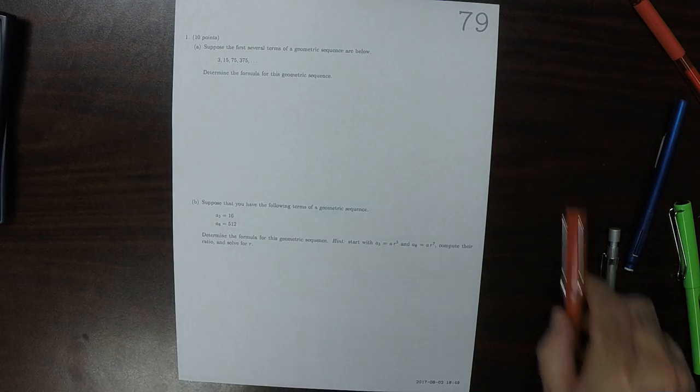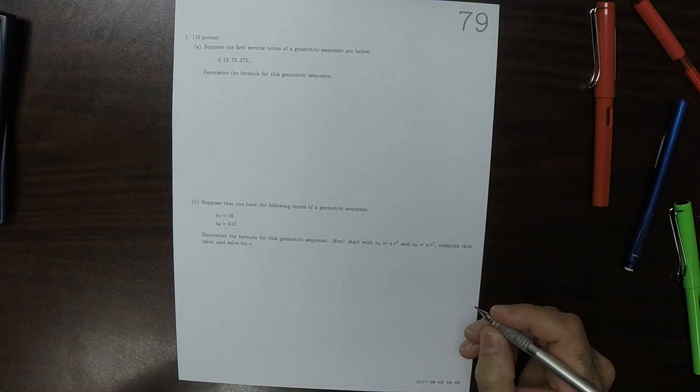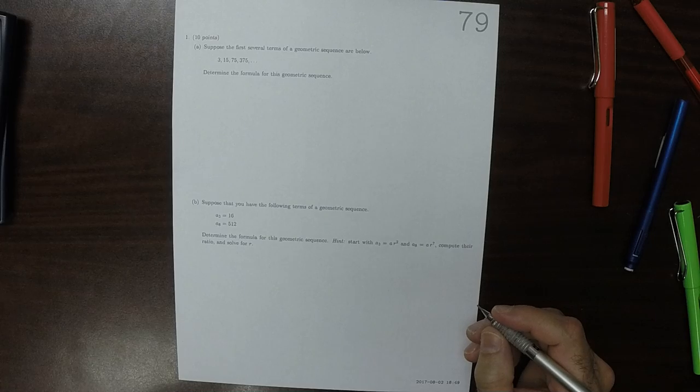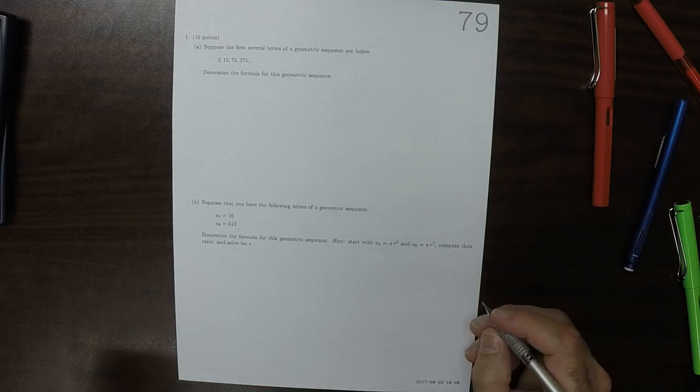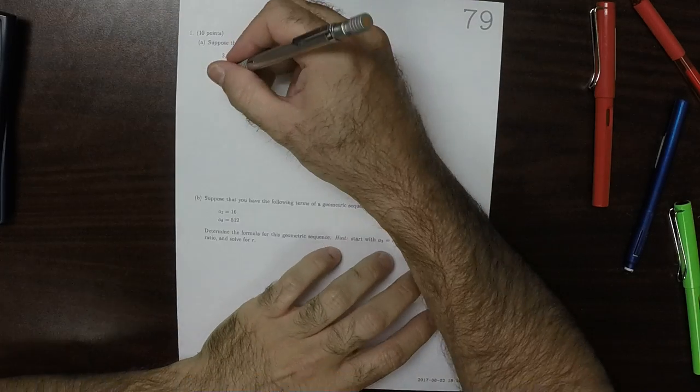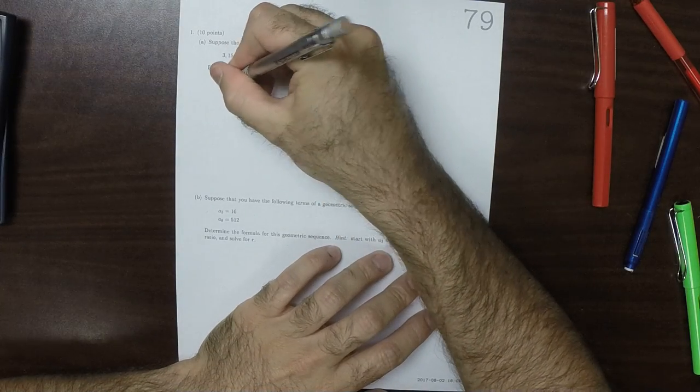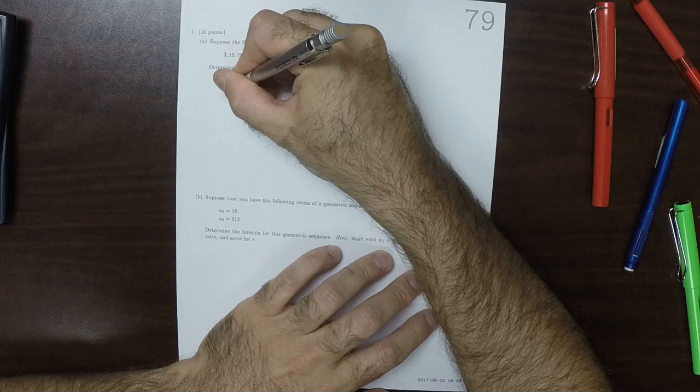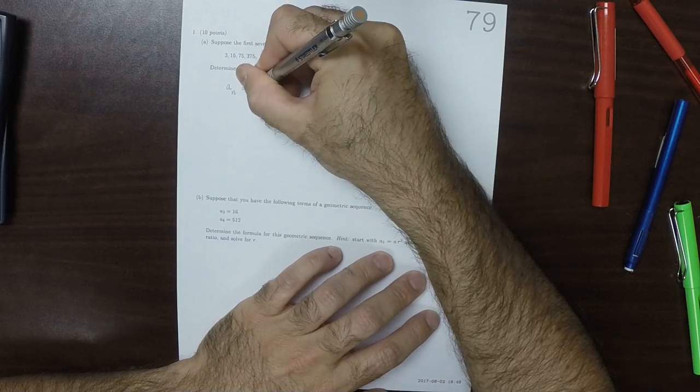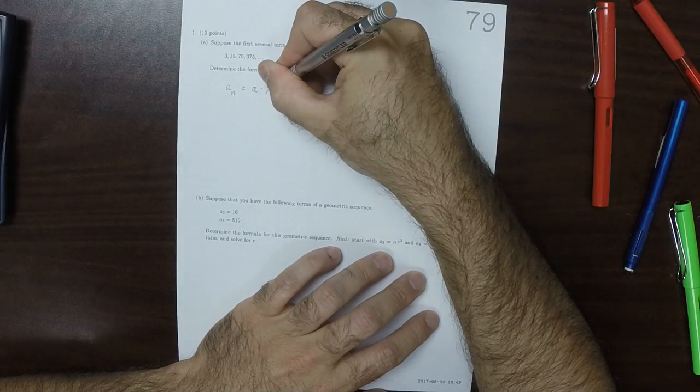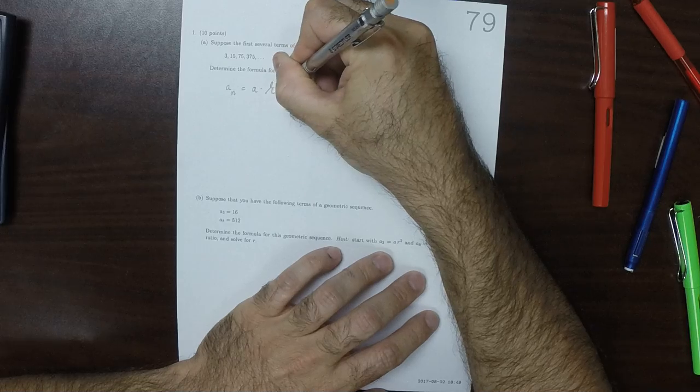This is the solution to written homework 79. As a reminder, all geometric sequences can be expressed as a_n equals some a multiplied by some r to exponent n minus 1.